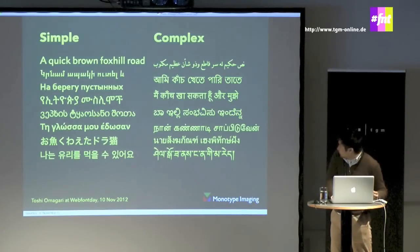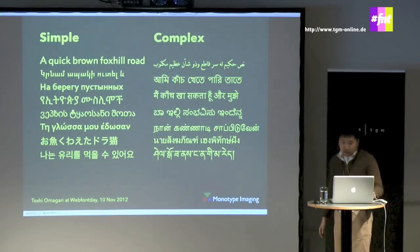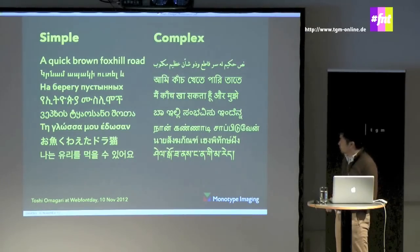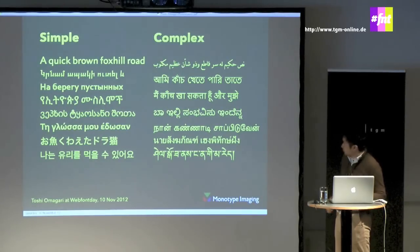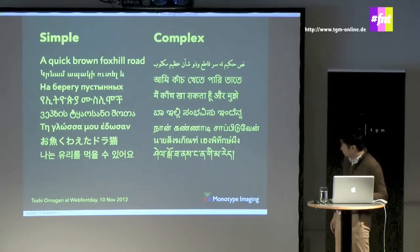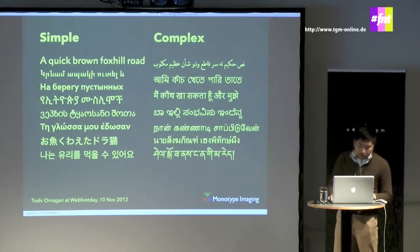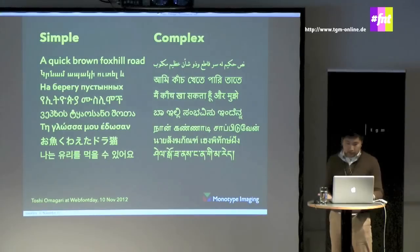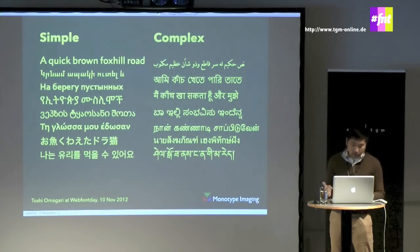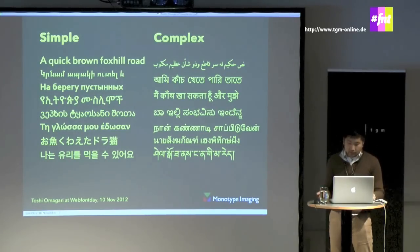Complex scripts are the ones that involve character repositioning, alternating, and reordering, unlike simple scripts whose character display is pretty linear. Latin, Armenian, Ethiopic, Georgian, Japanese, Korean, and Greek are all simple. But complex scripts include Arabic, Bengali, Thai, Tibetan, and similar scripts.